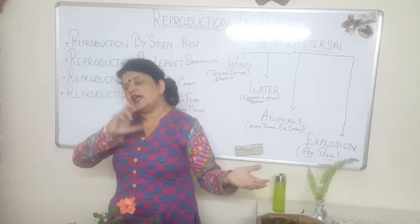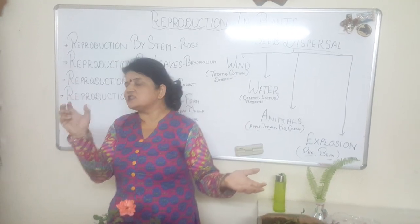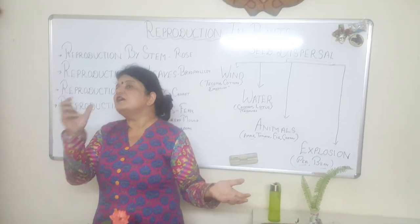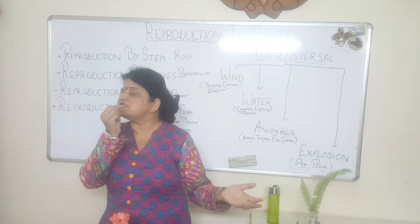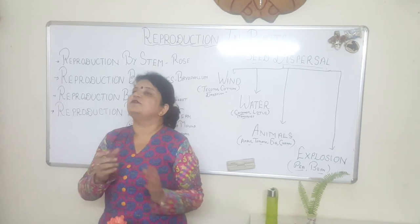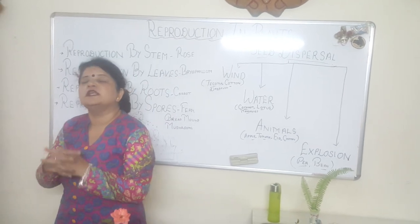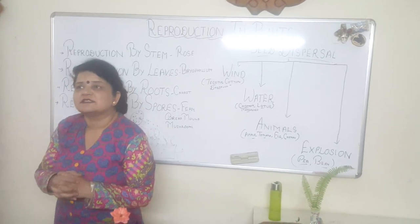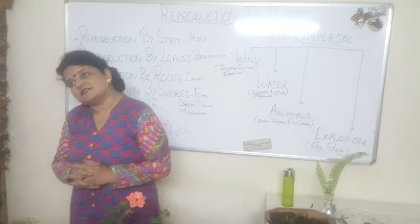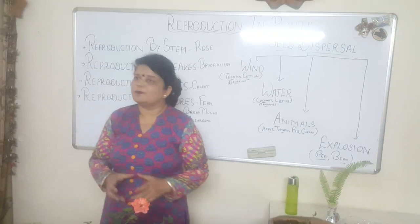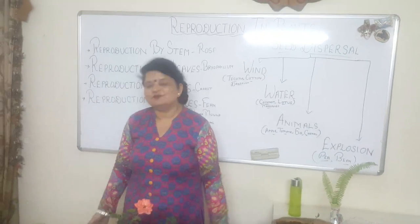Once the tiny plant is ready with root and shoot, they gradually transfer it to a pot and then to the ground in harsher conditions. With the help of tissue culture laboratories, with just one single cell, we are producing millions and millions of plants. Thank you.